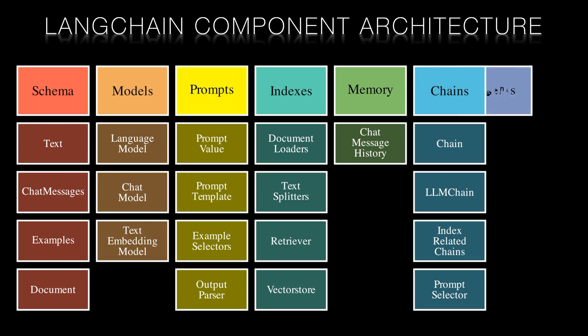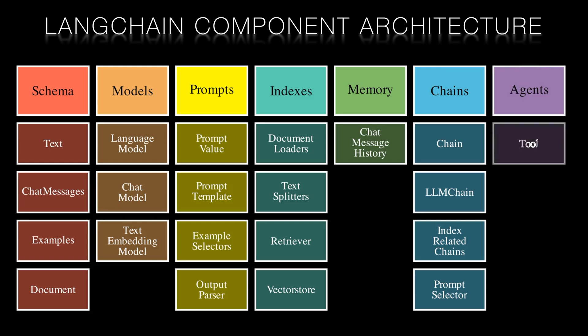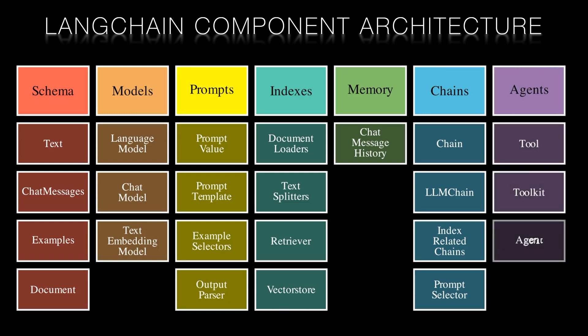Agents are the action-oriented components of Langchain, which include tool, toolkit, agent, and agent executor. They take user input, decide on an action, use the appropriate tool, and generate a response. Agents work closely with every other component to integrate them into a cohesive, interactive, and responsive AI system.